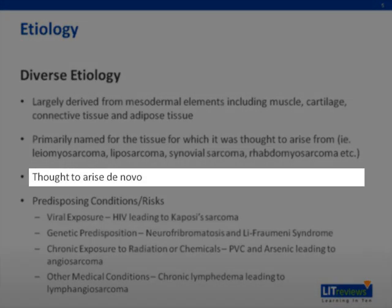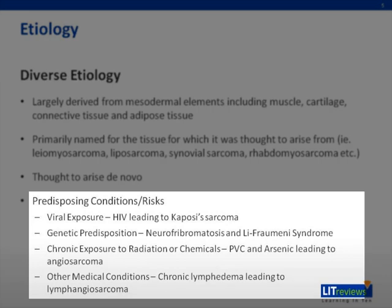Many of these sarcomas are thought to arise de novo, meaning they have no clearly defined etiology. There are some predisposing conditions and risk factors, such as viral exposure — for example, the human immunodeficiency virus, which may lead to Kaposi's sarcoma. There are also genetic predisposing factors such as neurofibromatosis and Li-Fraumeni syndrome, which can give rise to other types of sarcomas. There are exposure risks such as radiation or chemicals like PVC or arsenic, leading to angiosarcomas, and chronic lymphedema, which can lead to a lymphangiosarcoma.